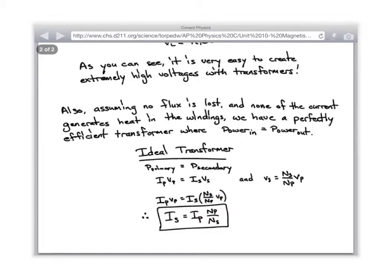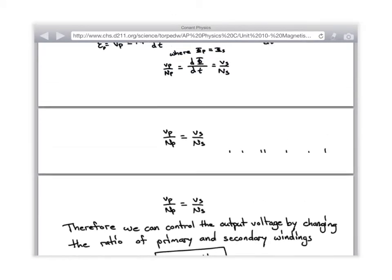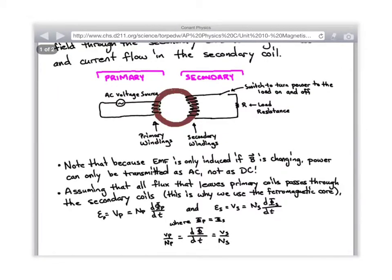Basic ideas for a transformer. Once again, you're going to assume that all the flux that goes through the primary because it has a core goes through the secondary. And the flux would be equal to, according to Faraday's law, the rate of change of the flux times the number of coils equals the voltage across it. And assuming these two rates of change of flux are equal, we therefore get the voltage on the primary divided by the number of coils on the primary equals the voltage on the secondary divided by the number of coils on the secondary. And you can use that relationship to solve everything you need.